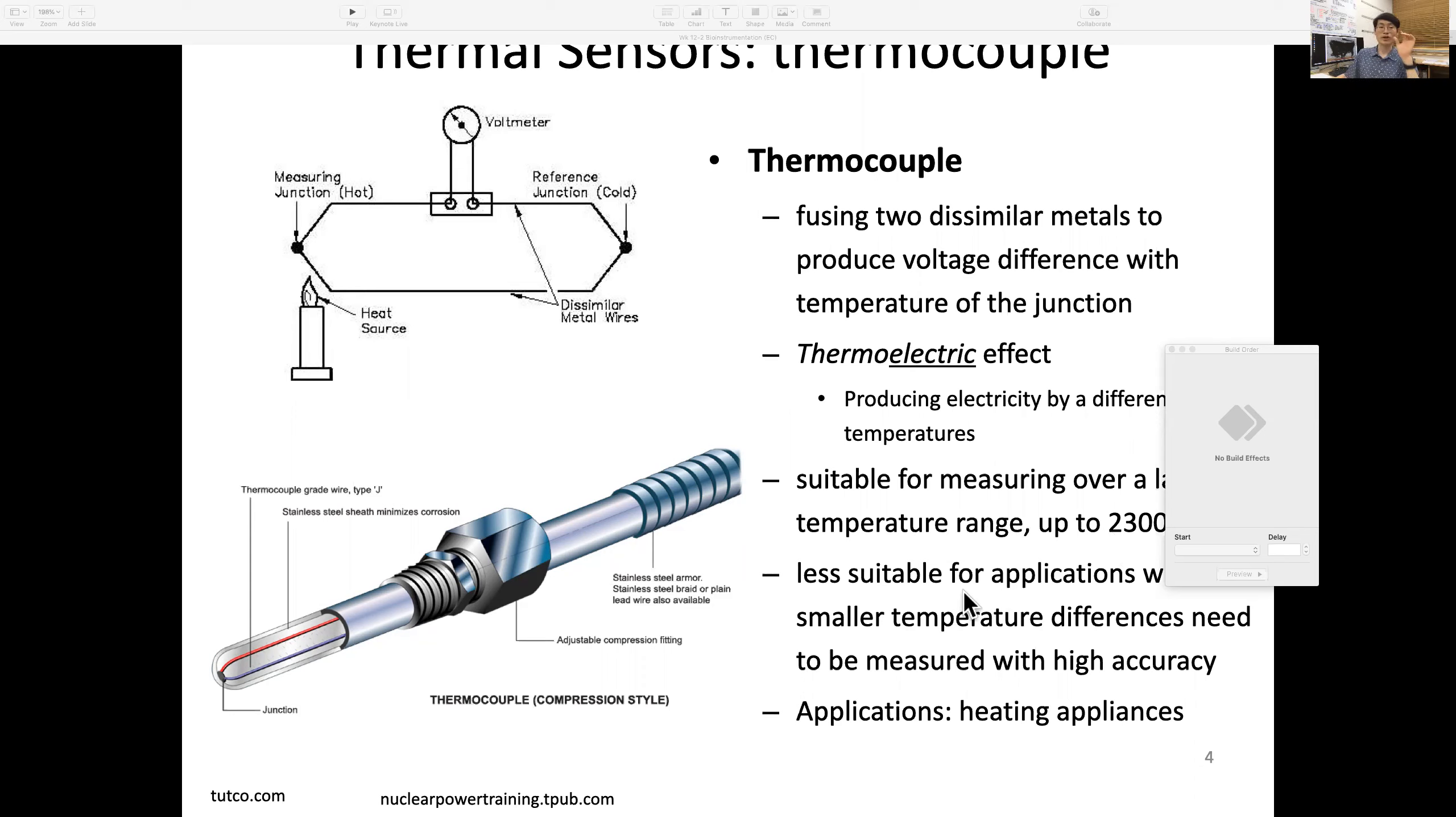On the other hand, it's less suitable where very small temperature differences need to be measured with high accuracy. Applications include heating appliances—like rice cookers at home, which likely use thermocouples.